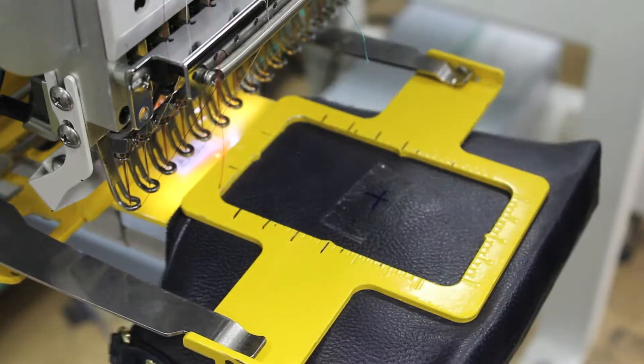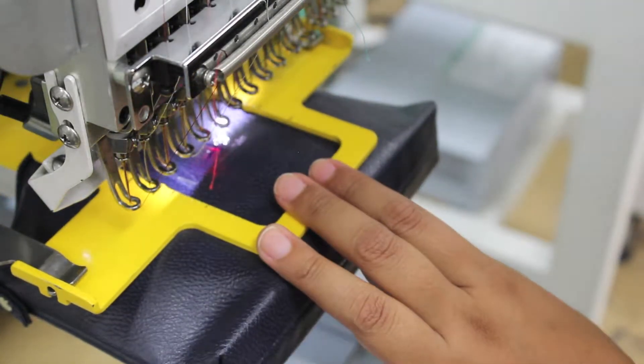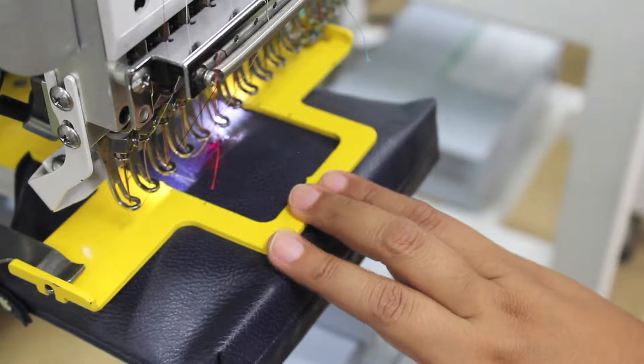Slide the purse onto a 2 by 4 inch slimline clamp frame. Pull the outside edge of the purse to the outside edge of the frame.